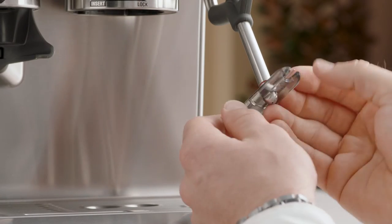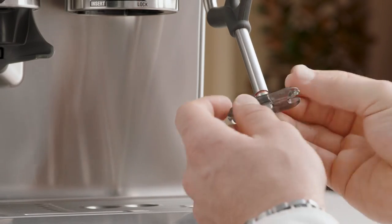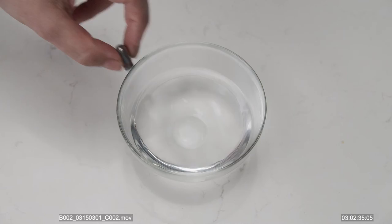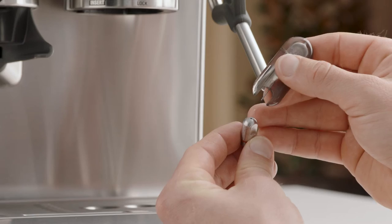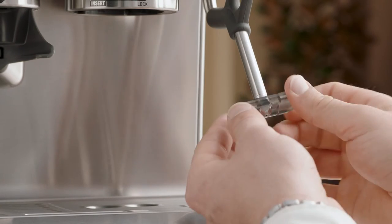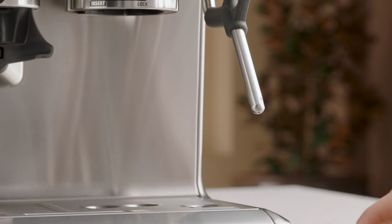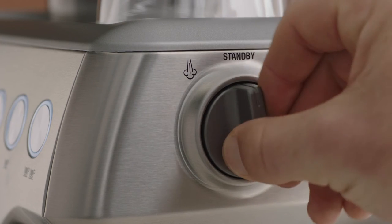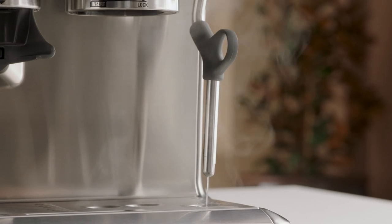To unlock, use the spanner in the middle of the steam wand cleaning tool to unscrew the tip. Soak the tip in hot water before using the cleaning tool to unblock, then replace the tip back onto the steam wand. Then turn the steam dial to the steam position to purge the steam wand after cleaning.